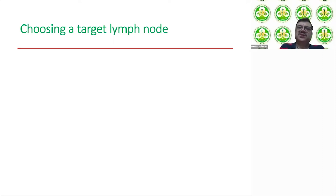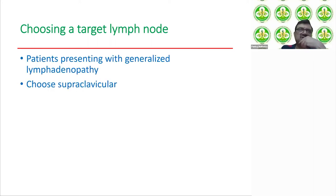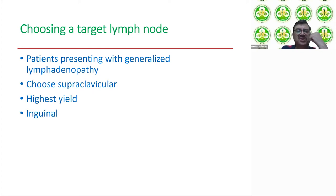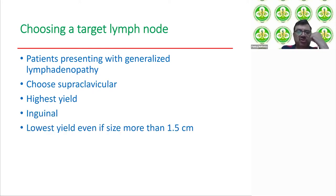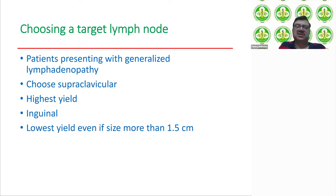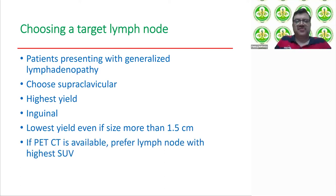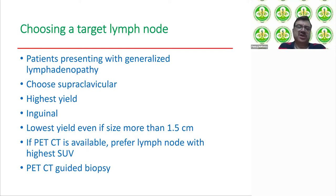If the patient has generalized lymphadenopathy, how do you choose which lymph node to biopsy? Mostly choose the cervical region, preferably supraclavicular, as it has the highest yield. Inguinal nodes have the lowest yield even if the size is more than 1.5 centimeters. If a PET-CT scan is available, prefer the lymph node with the highest SUV value, and sometimes you can do a PET-CT-guided biopsy.